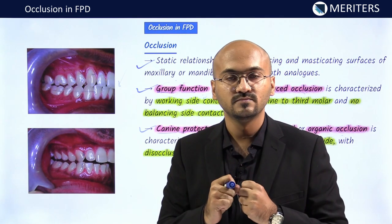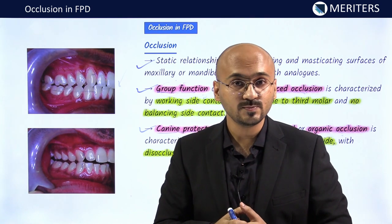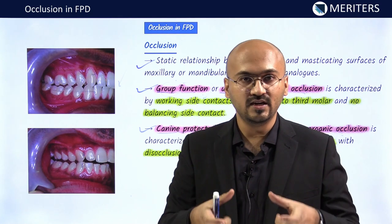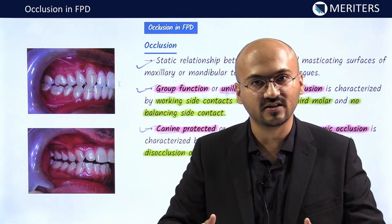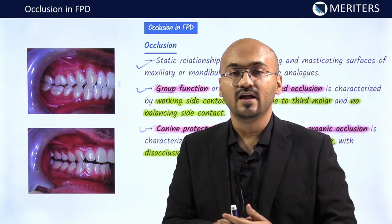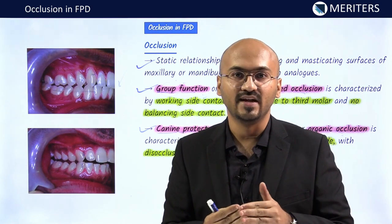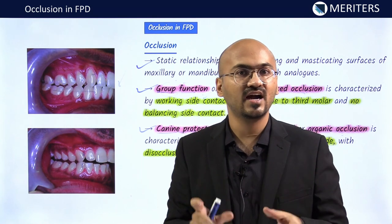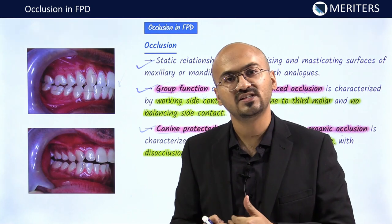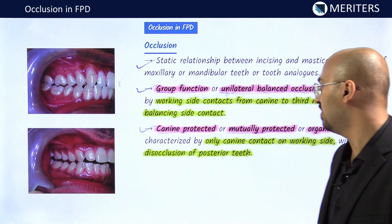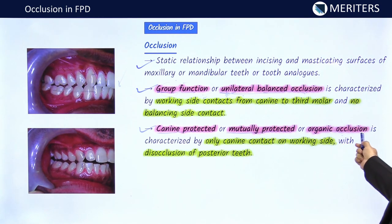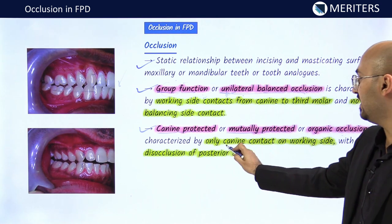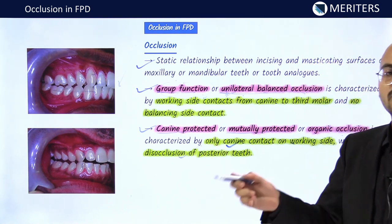Canine protected is also called mutually protected occlusion. When you bite completely, your anterior teeth do not touch — only posterior teeth touch. In maximum intercuspation, posterior teeth protect anterior teeth from excessive load. When you protrude to an edge-to-edge position, posterior teeth stop touching and only anterior teeth, especially up to the canines, are touching. So posteriors protect anteriors in centric, and anteriors protect posteriors in protrusion — they are mutually protecting each other, hence mutually protected or organic occlusion.